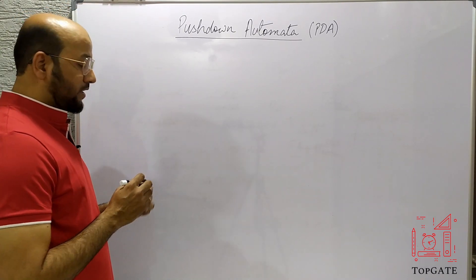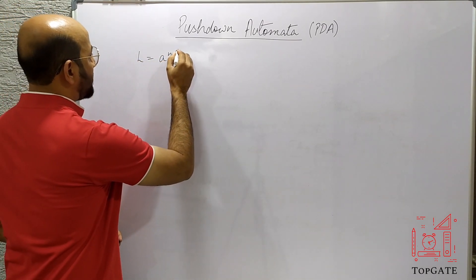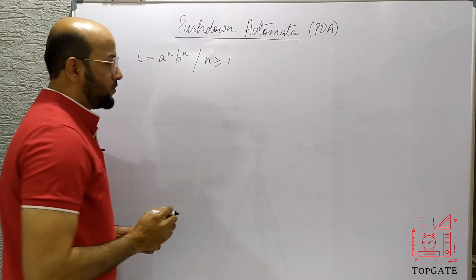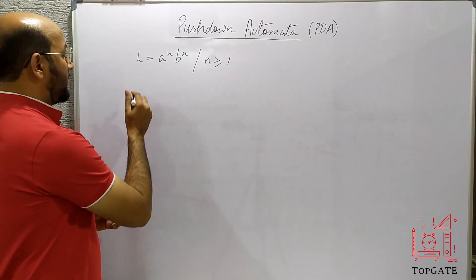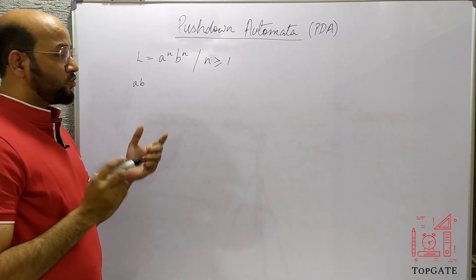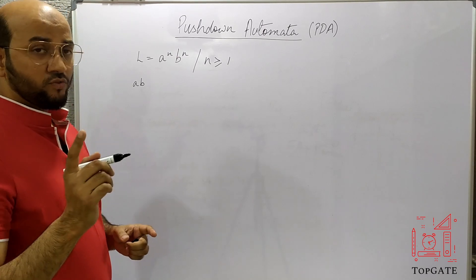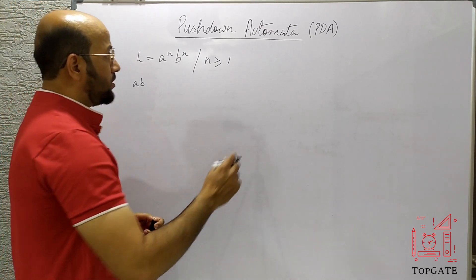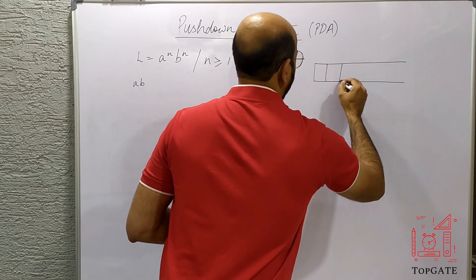Let us see how we design the PDA for a^n b^n. The language is a^n b^n where the value of N is greater than or equal to 1. If we keep N as the minimum, that is 1, the language we get will be AB — so AB should be the minimum string accepted by the PDA. With NFA and EFA it is not possible. We have a stack in a PDA, as discussed in previous lectures.